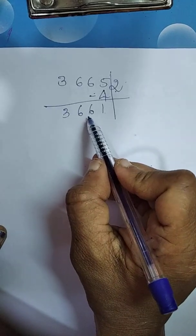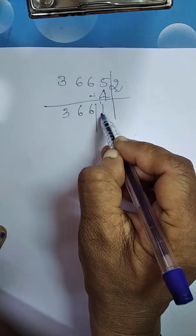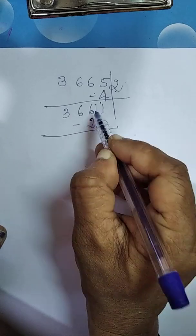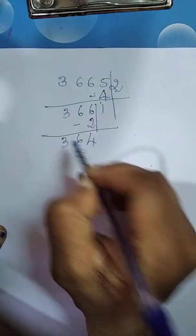Again, 3661 is big number. Select last digit. That is, 1. Double of 1 is 2. Right below the remaining part. And subtract. 6 minus 2 is 4, 6, 3.